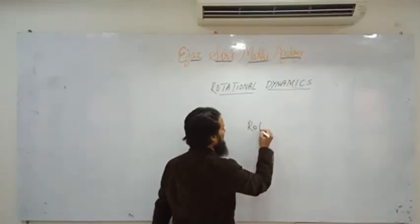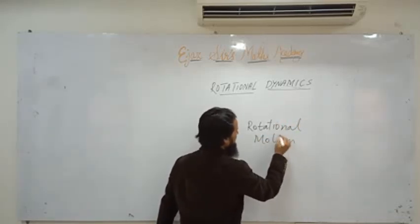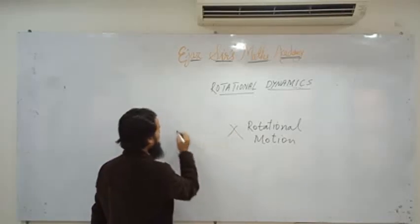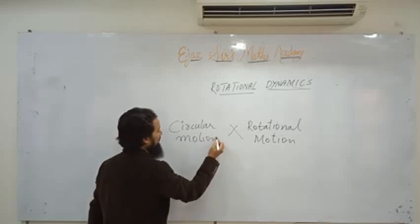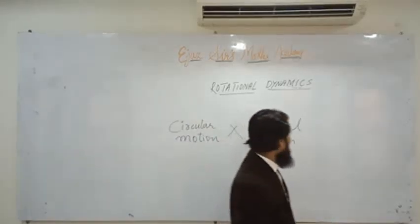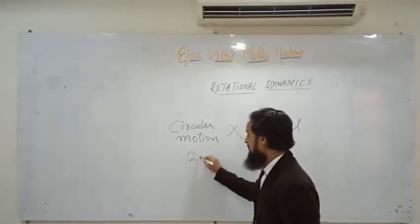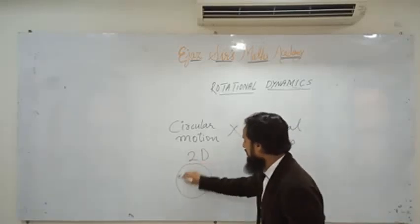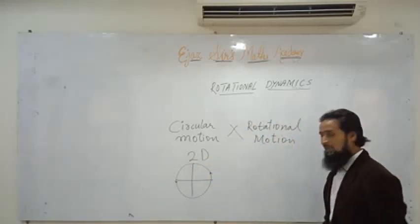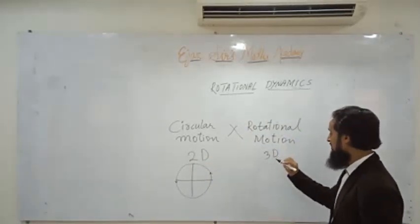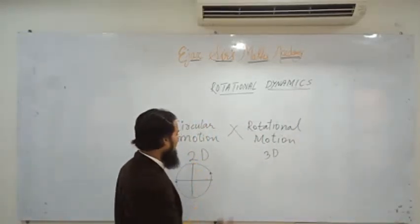Rotational motion is a different thing, and circular motion is another thing. In circular motion, it is two-dimensional motion. But in rotational motion, it is three-dimensional motion. Remember: in rotational motion, an entire body rotates. And in circular motion, a single particle rotates.